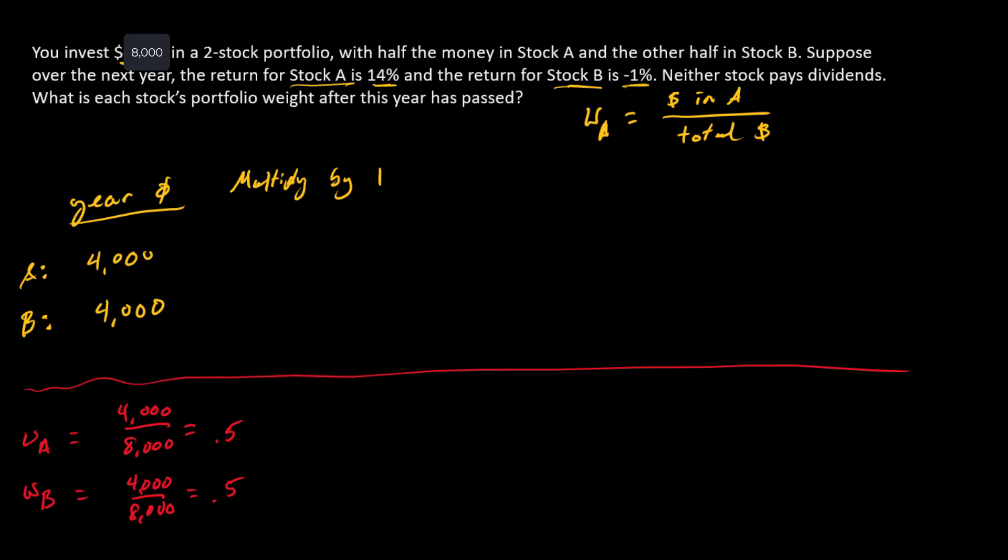We multiply by 1 plus r for the year. For stock A, 1 plus r is 1 plus 14%, so that's going to be 1.14. We multiply that.